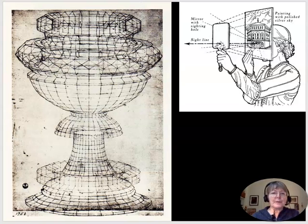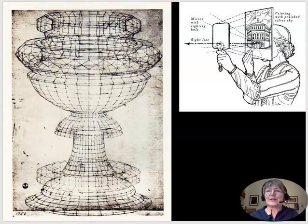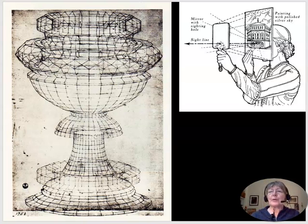In keeping with the competitive nature of the Renaissance, the first thing that Brunelleschi did when he realized how great this invention perspective was, was to give a public demonstration. That would allow him to take credit for the invention of perspective.